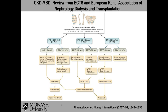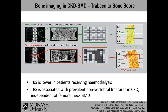Denosumab is preferred over bisphosphonates in this context because bisphosphonates are metabolised by the kidney, whereas denosumab is not — it is metabolised by Kupffer cells in the liver. Regarding trabecular bone score (TBS) in CKD-MBD: TBS is an indirect measure of trabecular microarchitecture in the vertebrae, derived from a standard DEXA spine image. TBS is lower in patients receiving haemodialysis and is associated with prevalent non-vertebral fractures independently of femoral neck bone density, providing additional fracture risk information in CKD patients.